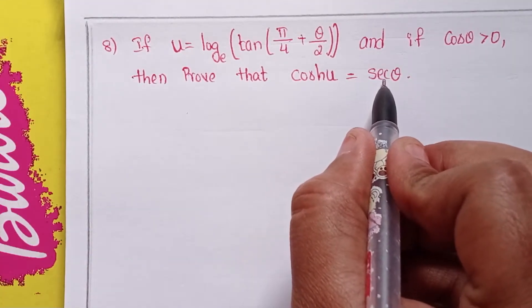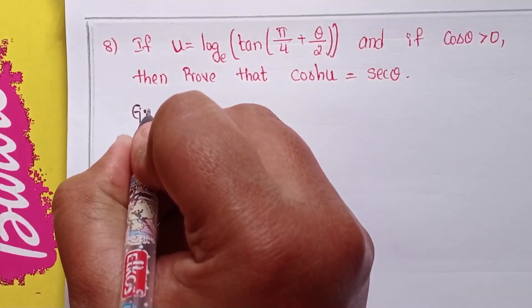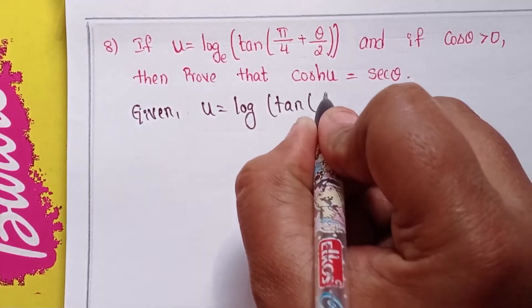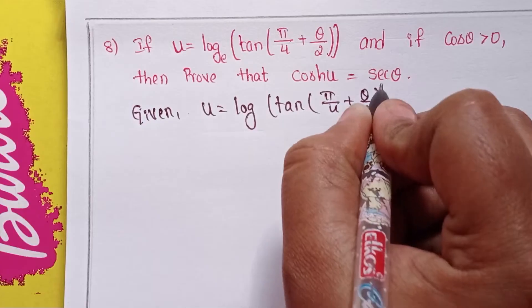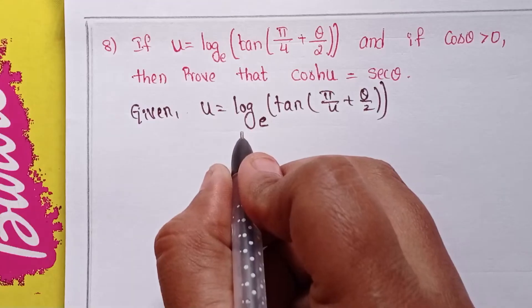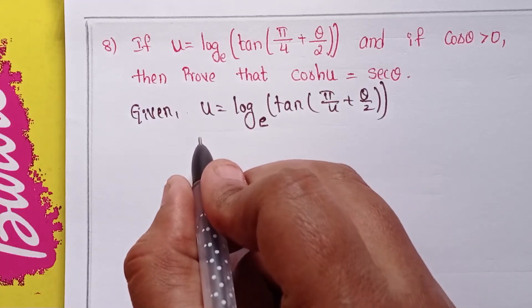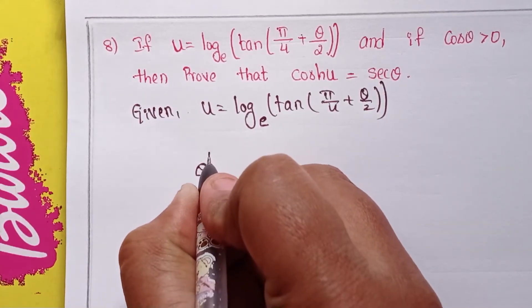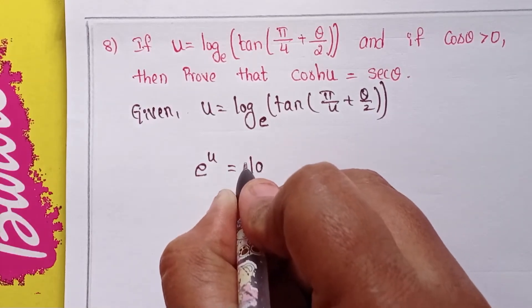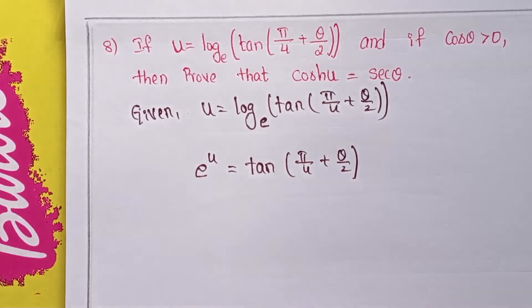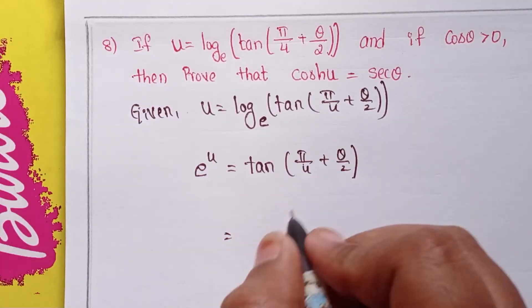First of all, you can write the given: u equals log of tan of (π/4 + θ/2) base e. Using the logarithm formula, you can write this in exponential form: e to the power of u equals tan of (π/4 + θ/2). This is the exponential form. Next, we apply the tan(A + B) formula.